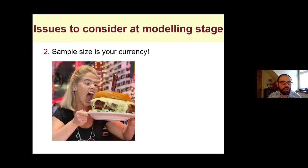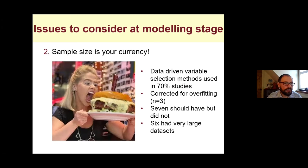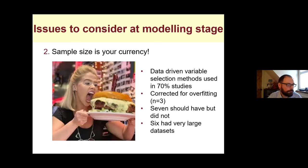Many prediction modeling methodologists suggest putting into the model known clinically important factors rather than using variable selection procedures. In our systematic review, data-driven variable selection methods were used in about 70% of studies — without much thought about which variables should enter the model. Only three studies corrected for overfitting. Seven studies should have corrected for overfitting but did not, likely having small samples with too many predictors leading to biased estimates. Six studies had very large datasets and didn't need to worry as much about overfitting.